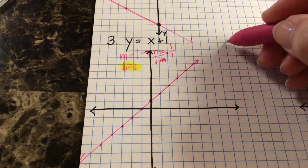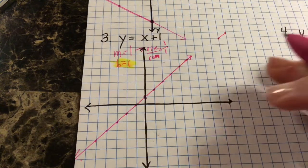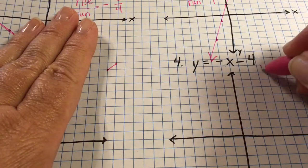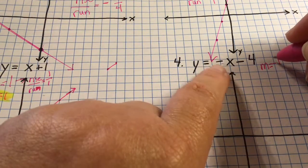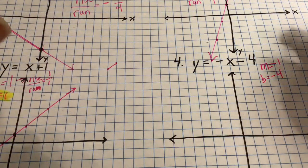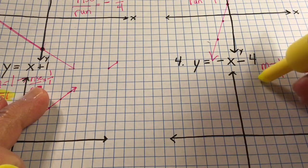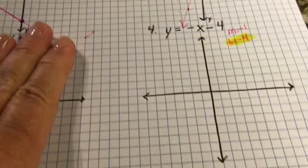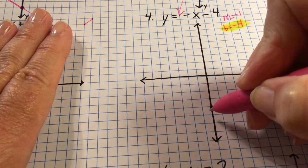If you draw from point to point without extending, that's a line segment. Make sure to put arrows on the ends of your line. For number four, slope is negative one — negative one is understood — and the y-intercept is negative four. I'm going to start with the y-intercept: negative four.